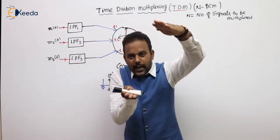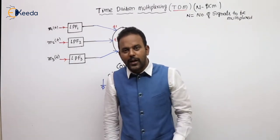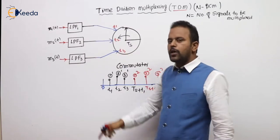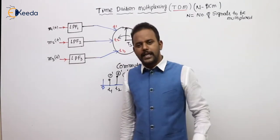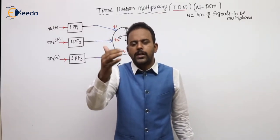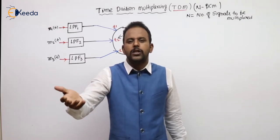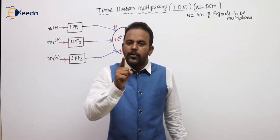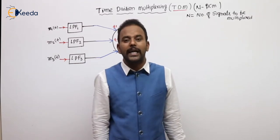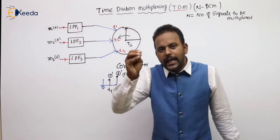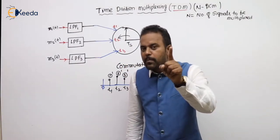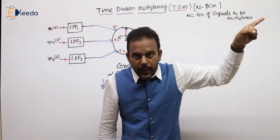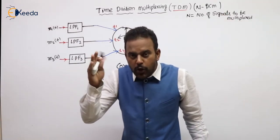Just like in FDM the total channel bandwidth is divided between the channels, in TDM the total time is divided. For example, if the commutator takes 10 seconds for one rotation: 0 to 2 is the first message, 2 to 4 is a gap, 4 to 6 is the second message, 6 to 7 is a gap, 8 to 9 is the third message, 9 to 10 is a gap. The total time of the commutator is divided between each and every message.